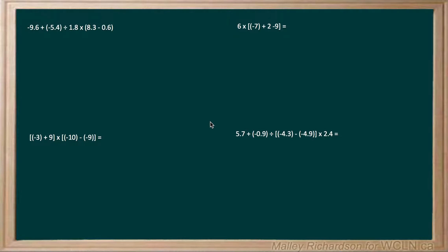Now we will look at our last four examples in this problem set. First we have negative 9.6 plus negative 5.4 divided by 1.8 times 8.3 minus 0.6. Going back to BEDMAS, we have to do our brackets first, which is 8.3 minus 0.6. We still write out our original expression, and 8.3 minus 0.6 equals 7.7.